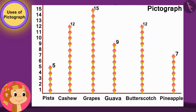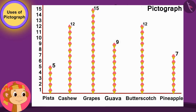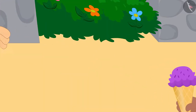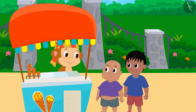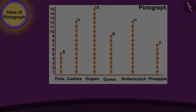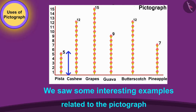Babban has decided, with the help of the pictograph, that he will also start selling grape ice cream from the next day. Babban sold grape ice cream at his stall the next day and everyone liked it very much. In this video, we saw some interesting examples related to the pictograph.